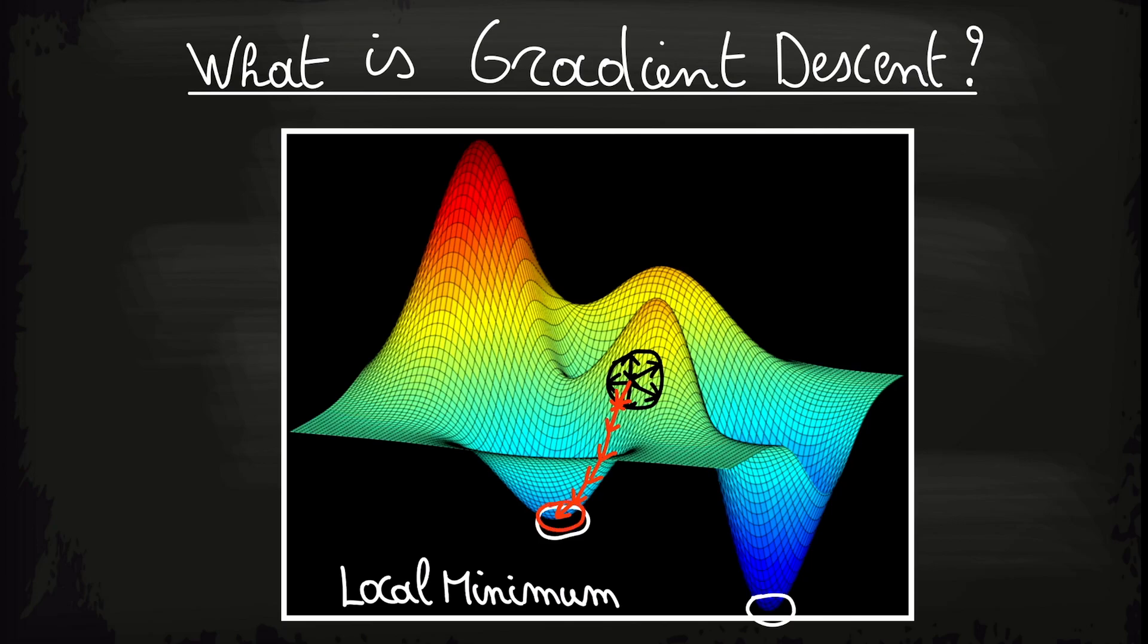Note however that we converge to a local minimum. As you can see on the graph, there are multiple minima and thus if we start with other initial values of theta, we might end up in another local minimum. For example, if we start over here and we do the exact same process as before, we will end up in this local minimum. This is a property of gradient descent that we will speak about in a moment.